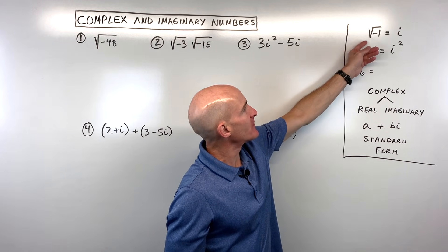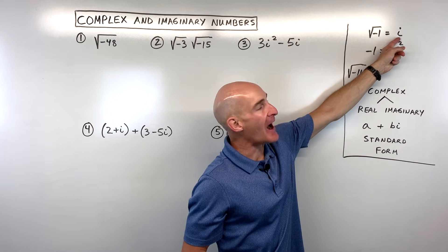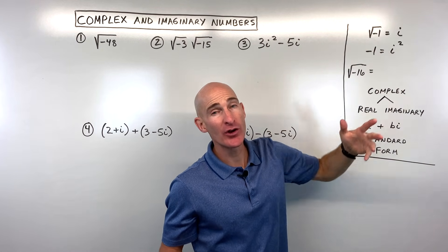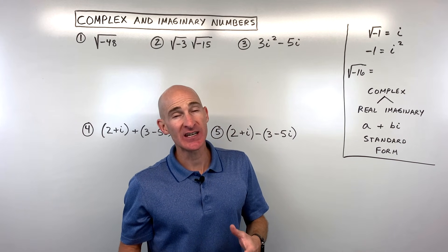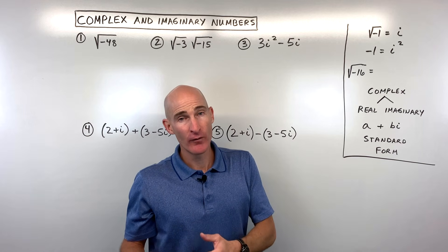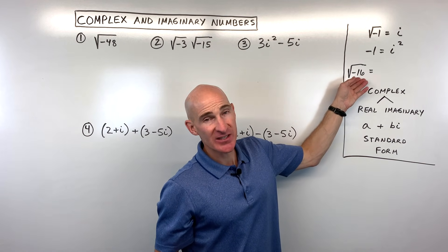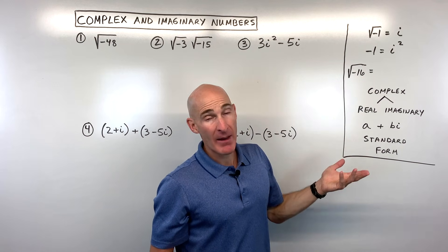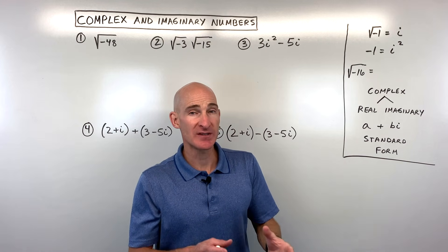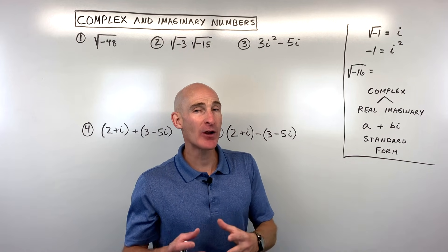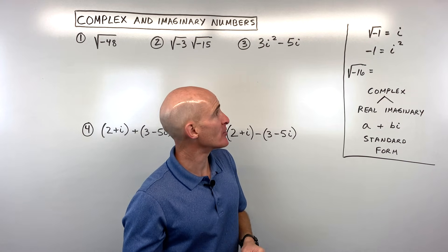The first thing you want to know is the square root of negative one — we call that i for imaginary. When you take the square root of 16, you ask what number times itself is 16, and that's four. But if we say what's the square root of negative 16, we can't say four times four — that's positive 16 — or negative four times negative four — that's also positive 16. So how do we take the square root of a negative number? That's where imaginary numbers come in.